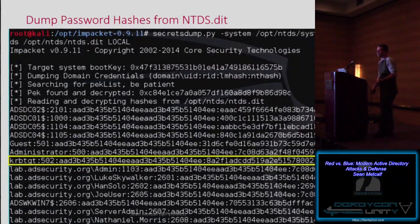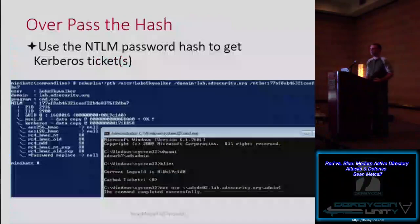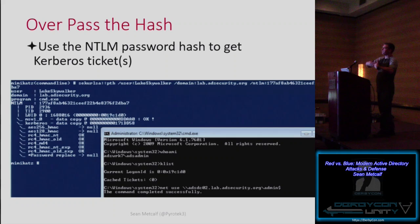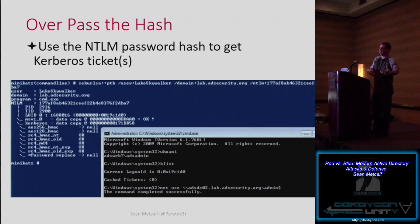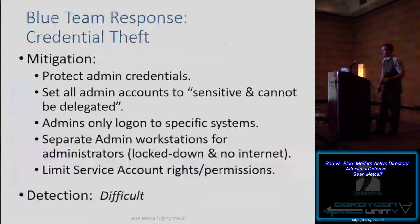Kali plus Impacket plus a DIT file and the registry key means you own the domain. Now you have hashes — including the krbtgt TGT, which means you can create golden tickets. Over-pass-the-hash is even better: clear out all Kerberos encryption keys for that user, inject the NTLM password hash, and when you request a Kerberos ticket, that NTLM hash is used — effectively converting the NTLM hash into Kerberos.